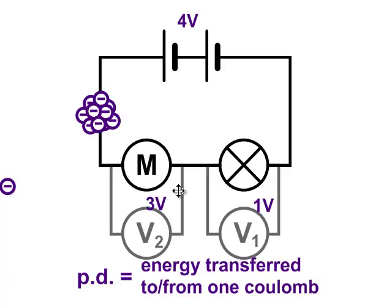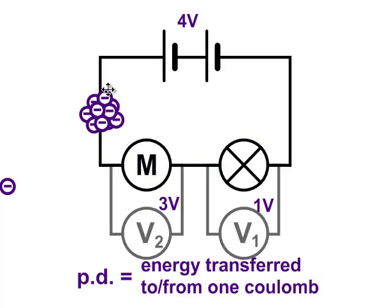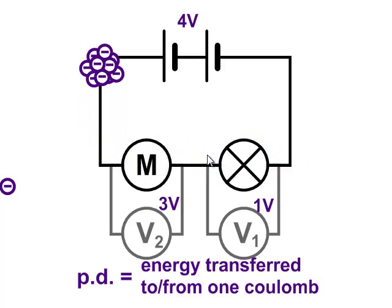So in a series circuit, energy is divided — energy is shared between the components in that series circuit. Therefore, the potential difference of the supply is shared out between the components. The potential difference across all the components in series adds up to the potential difference of the supply, because the energy shared between all the components has to add up to the energy given out by the supply.